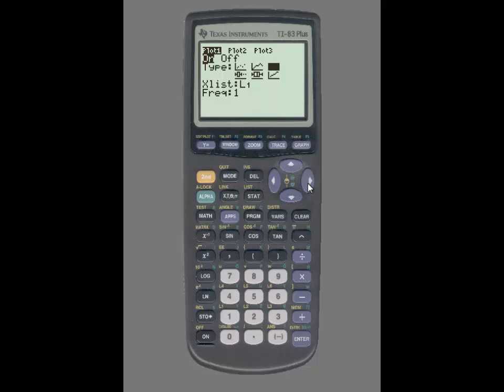Then again, we'll enter our list, and in this example, the data is already in L1, so I don't need to change my list. I will then press the Zoom button and then again number nine for Zoom Stat, and you can see the box plot.